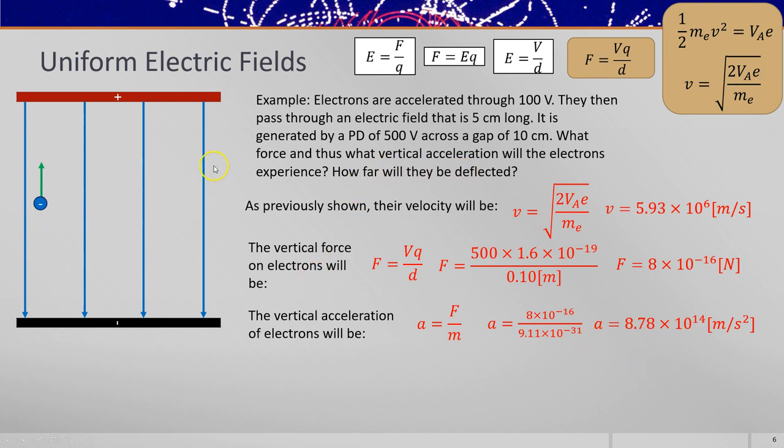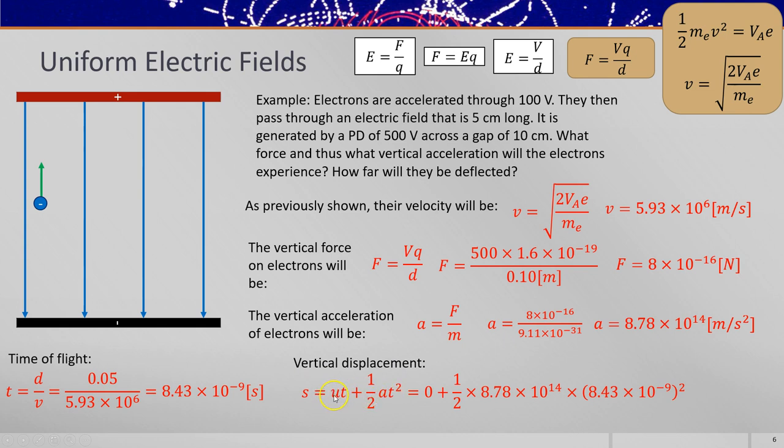How far up would they be deflected? Well, to find that out, you need to know how long they'll spend in the field first. So the time of flight would be distance over velocity, and we'll just take the horizontal velocity because that will remain constant. So 5 centimeters over the horizontal velocity gives you a time of flight. Now we can use a SUVAT equation to work out the vertical displacement, ut plus a half a t squared. If we're just considering that vertically, we know the acceleration and we know that the initial velocity is zero vertically because it travels horizontally to start with. So ut plus a half a t squared will give you the displacement, about 3 centimeters up because it's a negative charge.